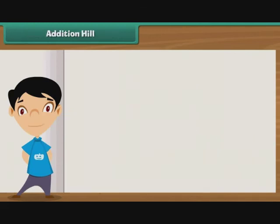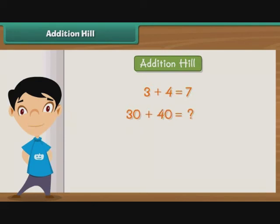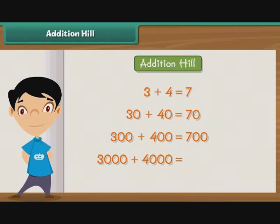Addition Hill. There is a very interesting pattern in addition called Addition Hill. We know that 3 plus 4 is 7. What will be 30 plus 40? 30 plus 40 is equal to 70. What will be 300 plus 400? 300 plus 400 is equal to 700. Now you can tell the sum of 3000 and 4000 very easily. 3000 plus 4000 is equal to 7000. As this pattern gives a hill-like structure, we call it the Addition Hill.